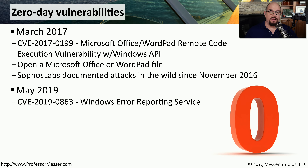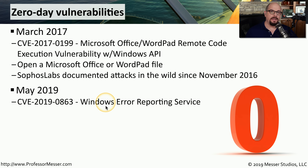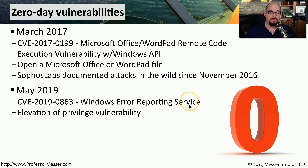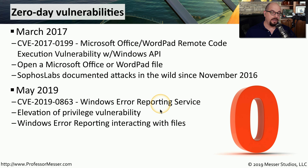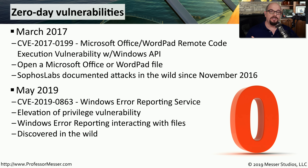Another example of a zero-day vulnerability was announced in May of 2019. This is CVE 2019-0863, and it's a vulnerability associated with the Windows Error Reporting Service — the service that pops up whenever there's an error that asks if you'd like to send information to Microsoft. This allowed an elevation of privilege, which means that the process of the Windows Error Reporting Service interacting with files allowed a standard user to suddenly have administrative rights and permissions.